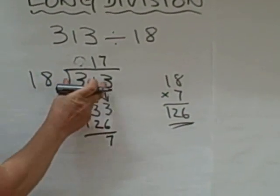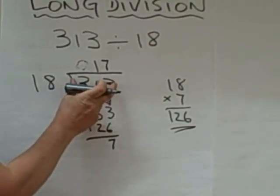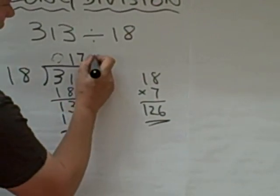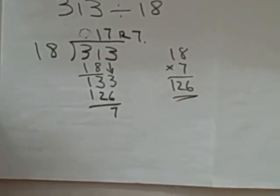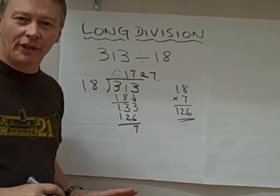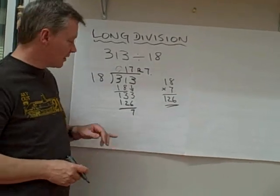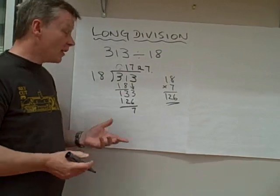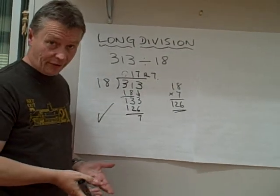So the answer to how many times does 18 go into 313 is 17 and 7 bits left over. Now I know I went through that very quickly, but if you stop the tape a couple of times, I hope that you'll be able to follow the working there. So that's one method of doing it, which is the formal method.